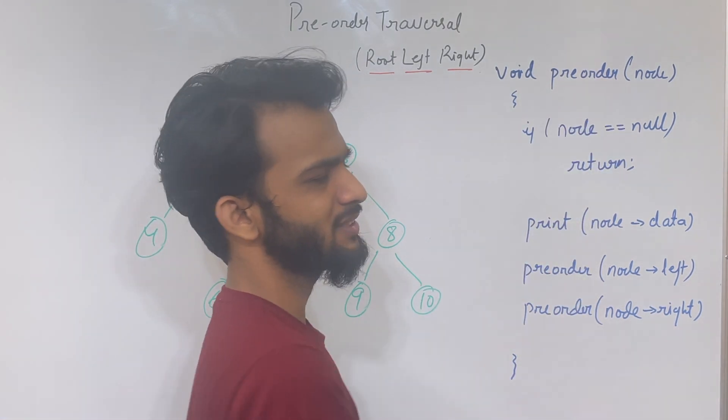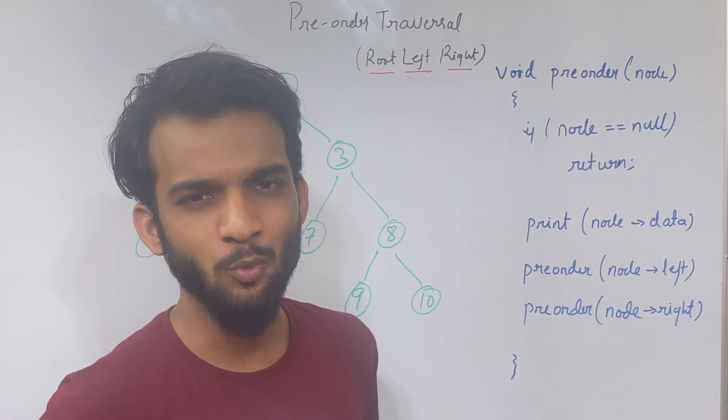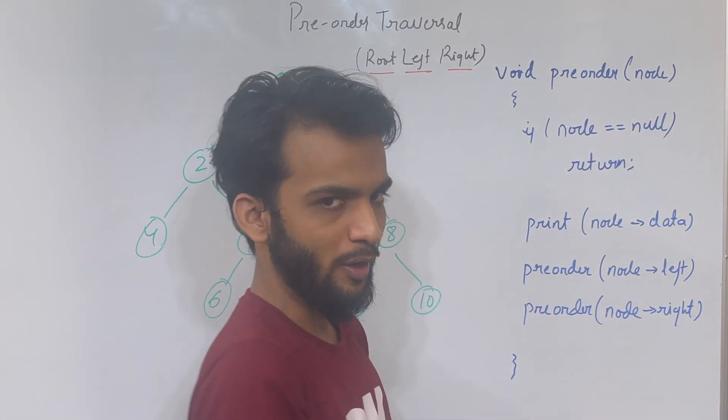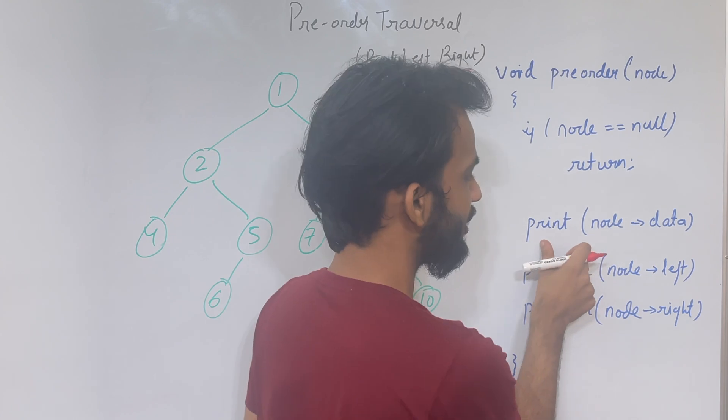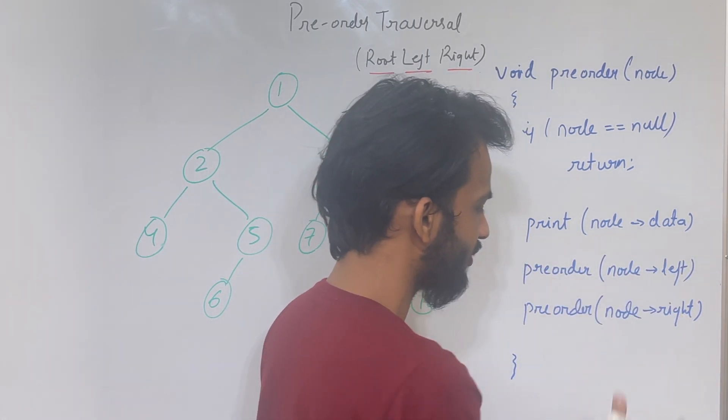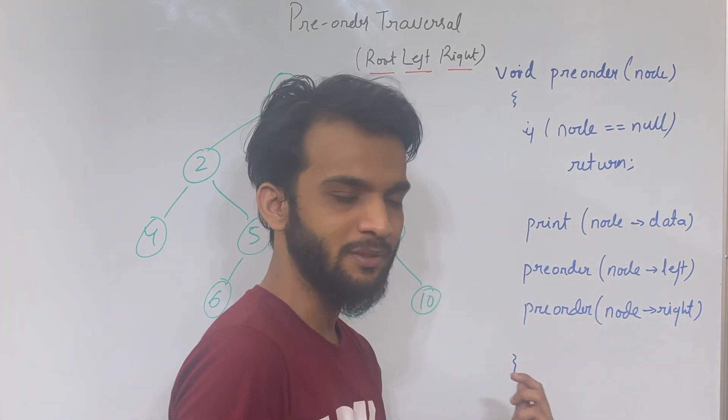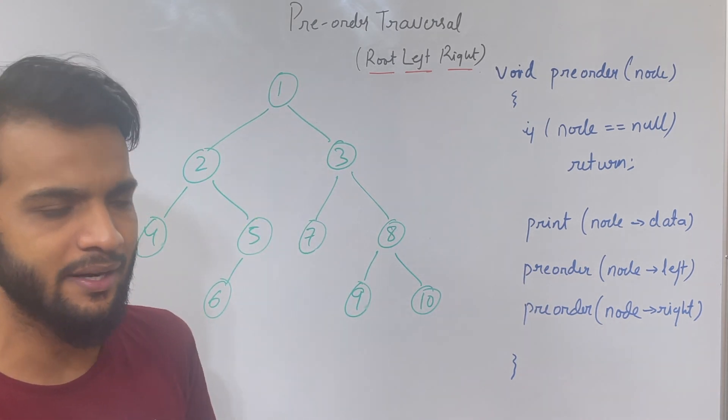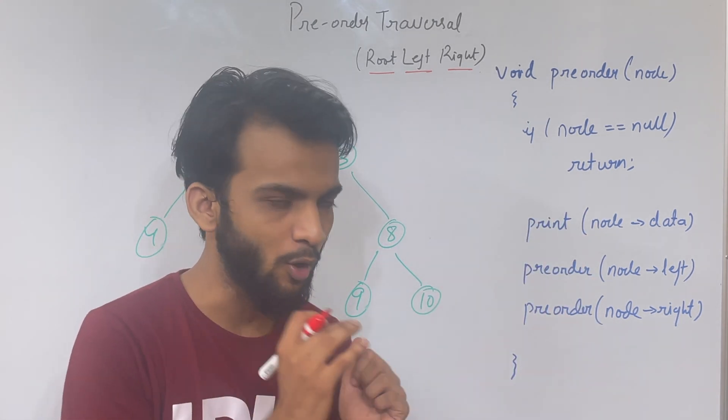We'll write the pre-order code. The C++ and Java code are almost similar. We'll take the node and if it's null, we return. Otherwise, we print, and after printing, we move to the left. After we come back from the left, we move to the right. That's simple code, but if we do the dry run, you'll understand why this code works.